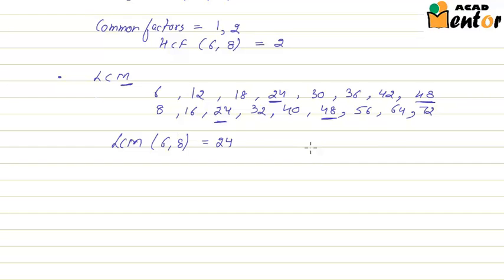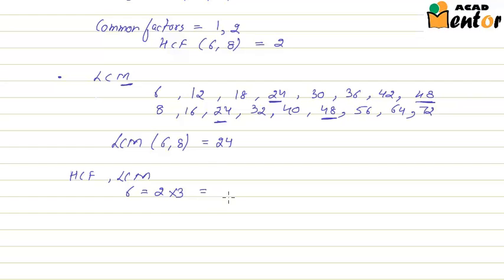Now imagine having to calculate HCF and LCM of very large numbers — that process of listing factors and multiples would be very tedious. This is where the Fundamental Theorem of Arithmetic is very helpful. To find HCF and LCM using this theorem, we first factorize 6 and 8. So 6 can be written as 2 to the power 1 multiplied by 3 to the power 1, and 8 can be written as 2 multiplied by 2 multiplied by 2, or 2 to the power 3.